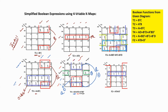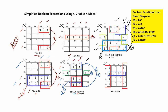For f1, we have three quads and one octet, totaling four groups. The eight-ones group lies in two rows with a=1 and all columns, giving a. The second group (b'd): two rows (a skipped), b=0 giving b', d=1, c skipped. The third group: two rows giving b', one column c=1, d skipped — giving b'c. The fourth group: two rows giving b', two columns with d=1, c skipped — giving b'd. Therefore f1 = a + b'c + b'd.